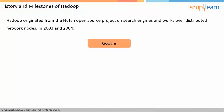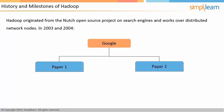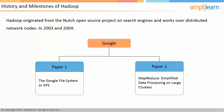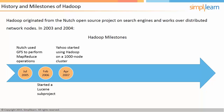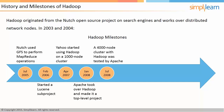Hadoop originated from the Nutch Open Source Project on search engines. In 2003 and 2004, Google released two papers providing insight into their success — the Google File System (GFS) and MapReduce — which simplified data processing on large clusters and showed the world how Google performed large-scale data processing. In July 2005, Nutch used GFS to perform MapReduce operations. In February 2006, Nutch started a Lucene sub-project which led to the era of Hadoop. In April 2007, Yahoo started using Hadoop on a 1,000-node cluster. In January 2008, Apache took over Hadoop, making it a top-level project, and in July 2008, a 4,000-node cluster with Hadoop was tested by Apache — it was the fastest compared to other technologies that year.